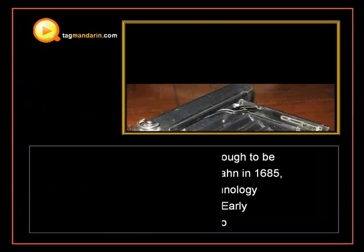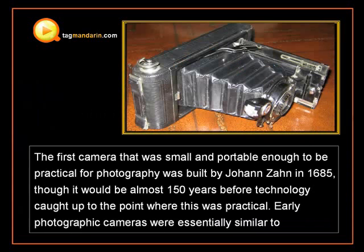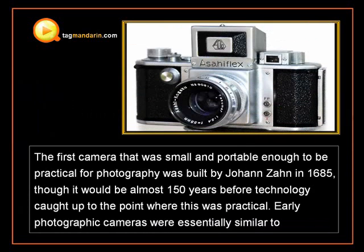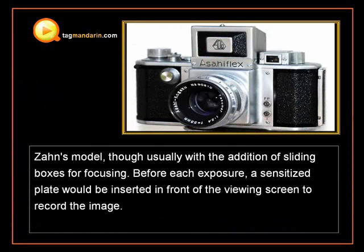The first camera that was small and portable enough to be practical for photography was built by John Zahn in 1685, though it would be almost 150 years before technology caught up to the point where this was practical.